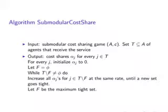Before the analysis, let's look at the algorithm Submodular Cost Share. The input is a submodular cost sharing game (A, C) and a set T ⊆ A of agents that receive the service. The output is the cost shares alpha_j for every j in T. The algorithm initializes alpha_j = 0 for every j, and sets F = ∅. Then in a while loop, while T \ F is not empty, the algorithm increases all alpha_j for j in T \ F at the same rate until a new set goes tight, and sets F to be the maximal tight set. This is Figure 15.3 describing the algorithm for computing cost shares in a submodular game.